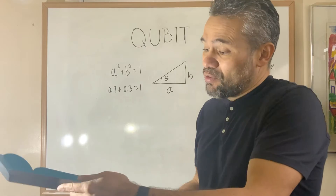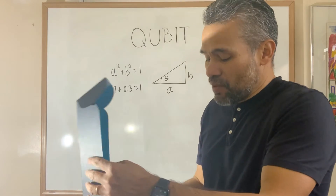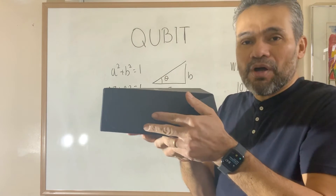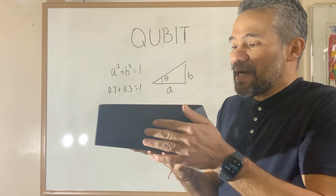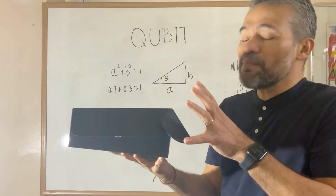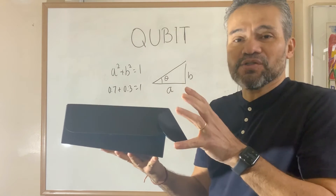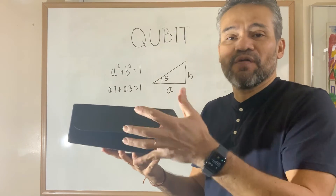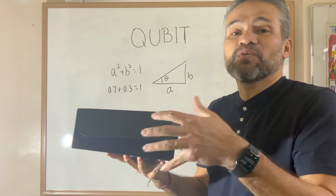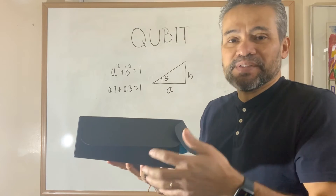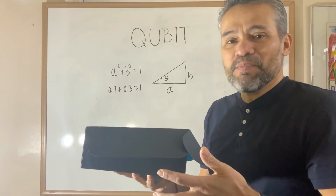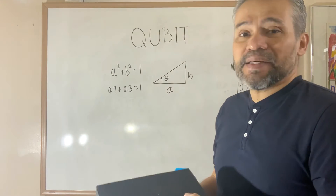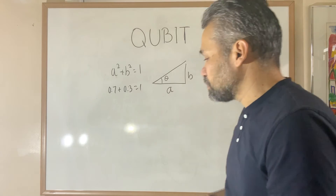The good thing is that when we don't measure the qubit, it's like in a black box, and with a quantum computer we can modify the qubit without measuring. Remember, any time we measure it we are going to get either a zero or a one.